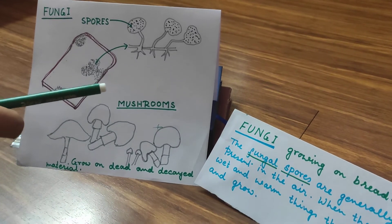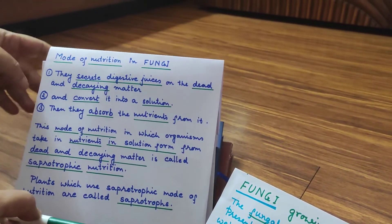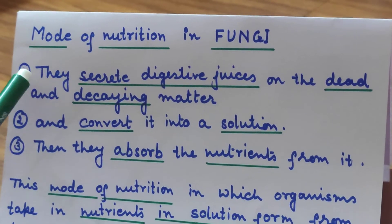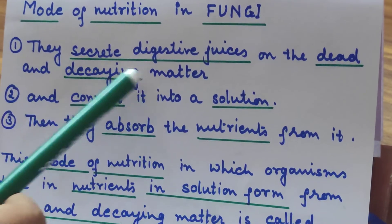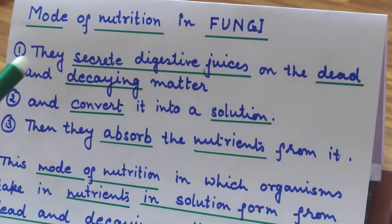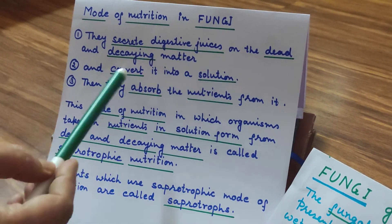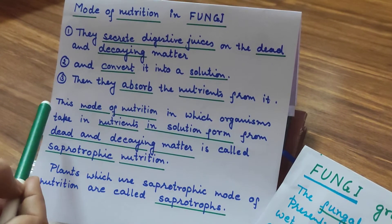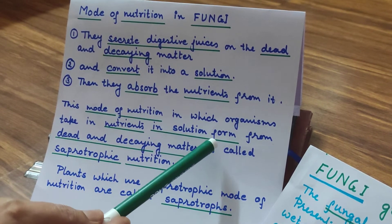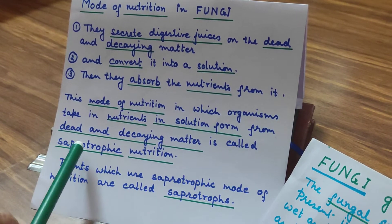And they show a type of nutrition that is called saprotrophic nutrition. So here you see the mode of nutrition in fungi. They secrete digestive juices on the dead and decaying matter — as they are growing on some dead and decaying matter, they secrete digestive juices on that matter and convert it into a solution. Then they absorb the nutrients from it. So this mode of nutrition, in which organisms take in nutrients in solution form from dead and decaying matter, is called saprotrophic nutrition.